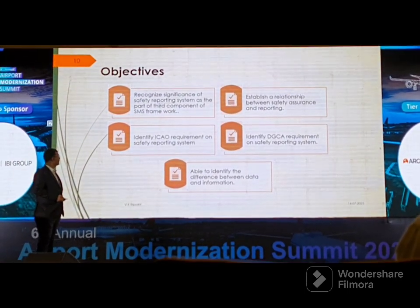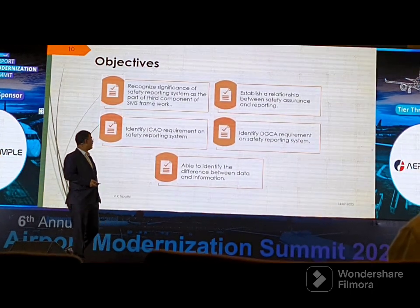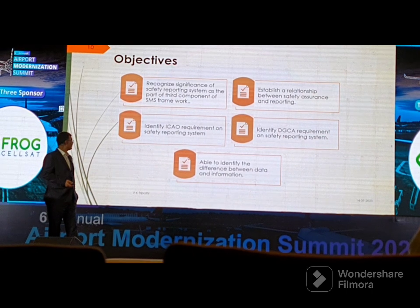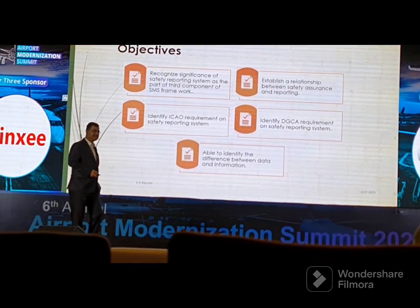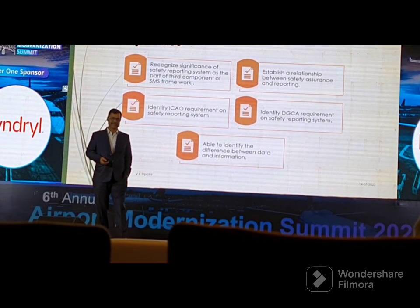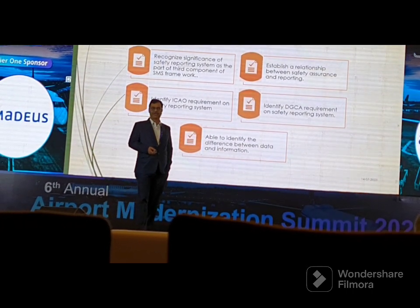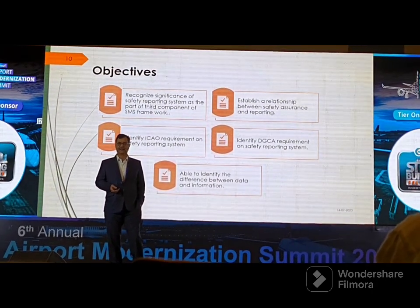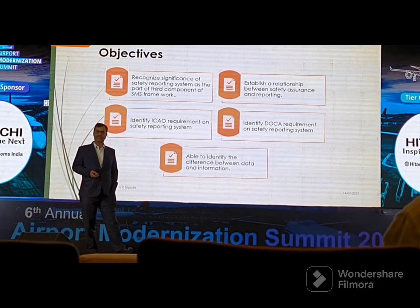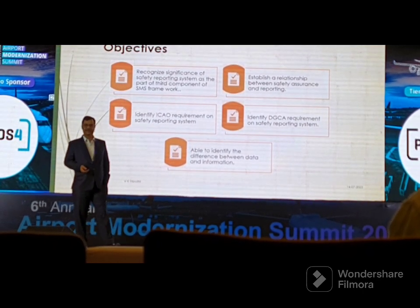The significance of the safety reporting system is that it is the third component of the SMS framework. There are four components, which include establishing a relationship between safety assurance and reporting. ICAO identifies requirements on the safety reporting system, with a very defined and catalogued coding system. DGCA may specify requirements additional to what ICAO requires, depending on state-identified risks or hazards.